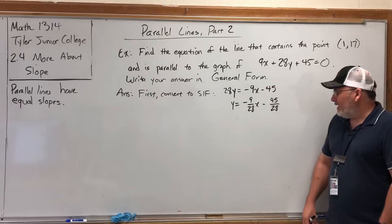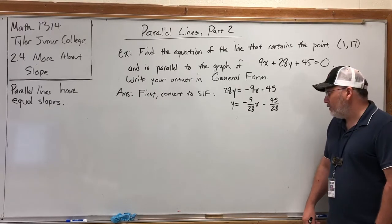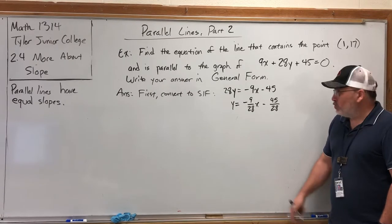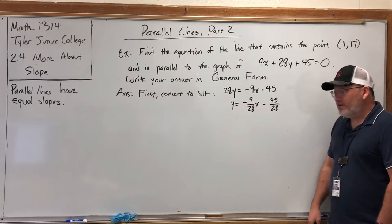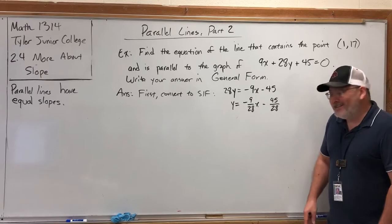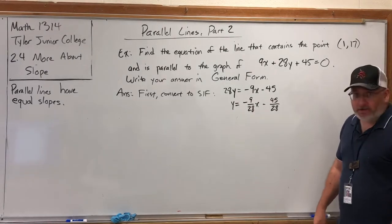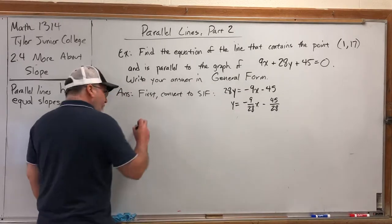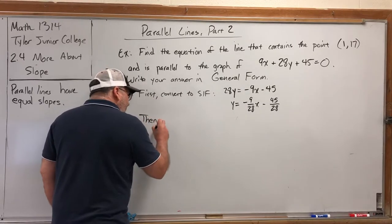Now, 9/28 won't reduce because 9 can only be reduced by 3 or 9. 45/28, you might investigate whether it reduces. I'll tell you right now it won't. But whether it reduces is actually irrelevant, because why did I convert this to slope-intercept form? Because I need to look at the slope and use the parallel slope.